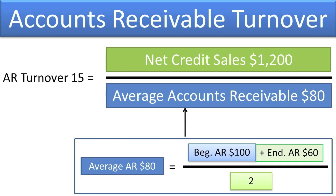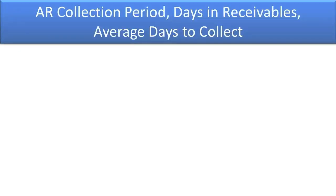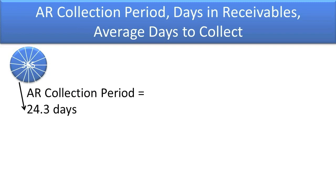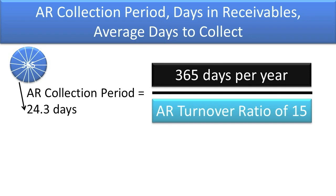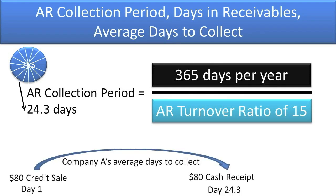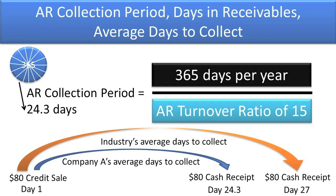That is a pretty good AR Turnover Ratio, but it becomes more interesting when we compute the number of days Company A takes to collect $80 of credit sales. If we take the 365 days of a normal year and divide it into 15 equal collection periods representing the company's AR Turnover Ratio of 15, we get 15 collection periods of 24.3 days each: 365 days per year divided by an AR Turnover Ratio of 15 equals a collection period of 24.3 days. If the industry average collection period were 27 days, it would seem that Company A is managing its credit and collection process comparatively more effectively and efficiently than the industry.